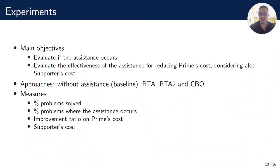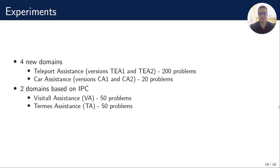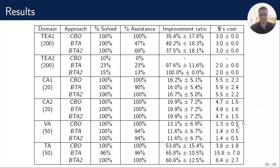In the experiments, our main objectives were to evaluate whether assistance occurs and to evaluate the effectiveness of the assistance for reducing Prime's cost, considering also Supporter's costs. Our approaches were BTA, BTA2, CBO, and without assistance as our baseline. We measured the percentage of problems solved, the percentage of problems where assistance occurs, the improvement ratio of Prime's cost when assistance occurs, and Supporter's cost. We implemented four new domains from scratch — Teleport Assistant 1 and 2, and Car Assistant 1 and 2 — and two domains based on domains from the International Planning Competition: Visitor and Termes. This table shows the results. As we can see, CBO is not always the best approach. In fact, in Teleport Assistant 2 and Termes Assistant, it is not a good option in comparison with the other two alternatives.